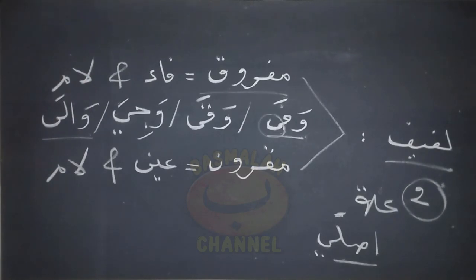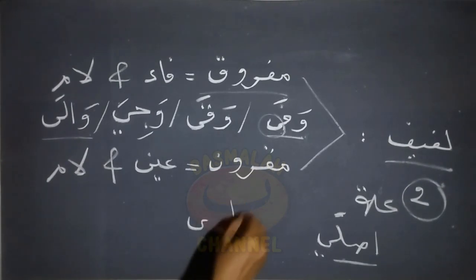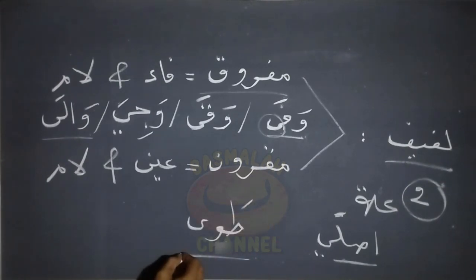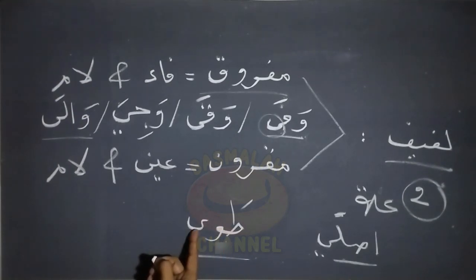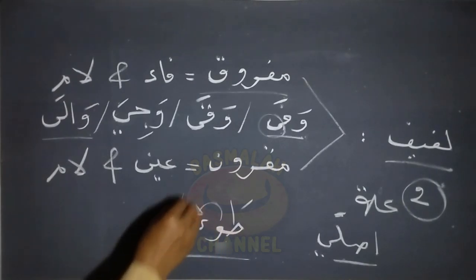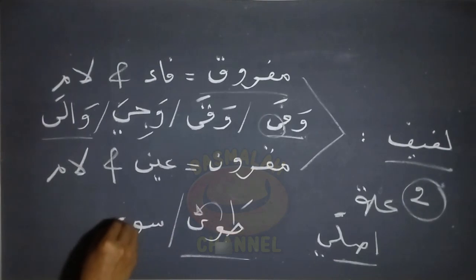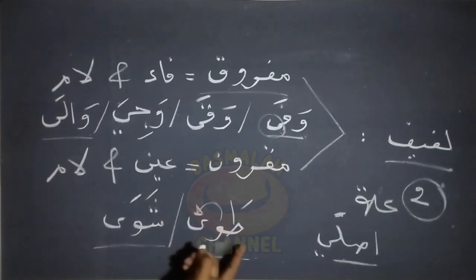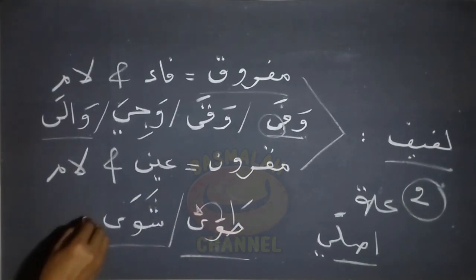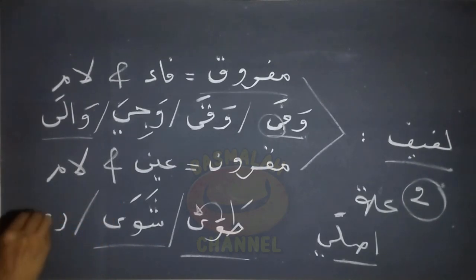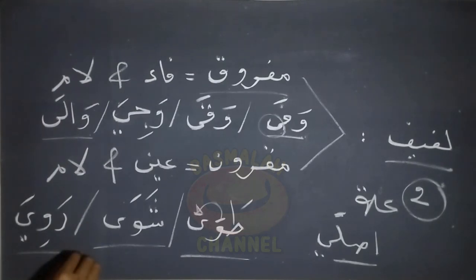Selanjutnya contoh yang la'fif maqrun, seperti lafad qawwa. Di sini posisi dari huruf ilatnya terdapat pada ain fi'il dan lam fi'il sehingga posisinya bertemu langsung. Contoh yang lain seperti lafad syawwah dan juga lafad rawwiyah. Lafad rawwiyah itu juga sama, posisi huruf ilatnya berada pada ain fi'il dan lam fi'ilnya.